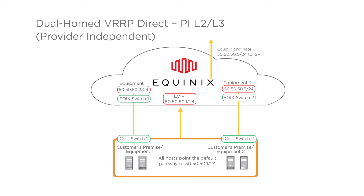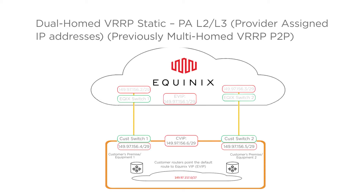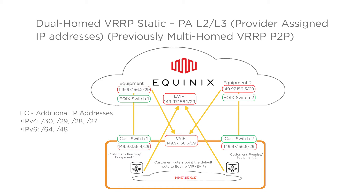Dual-homed VRP static, PA — layer 2/layer 3, provider-assigned IP addresses — previously known as multi-homed VRP point-to-point. This is the most common configuration for primary or secondary internet access. Here the customer is using a routed network behind their devices. They are provided with an IPv4 /29 or IPv6 /125 for provisioning. The customer points the default route to the first IP on the /29 point-to-point subnet. It shows the customer with a /27 for the routed network, with additional IP address choices of IPv4 /30, /29, /28, or /27, and IPv6 /64 or /48.